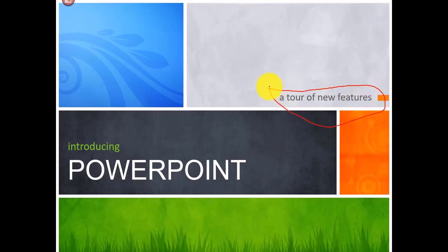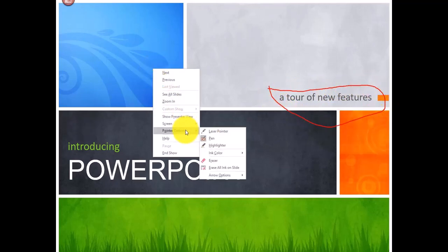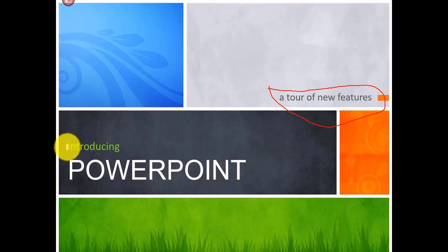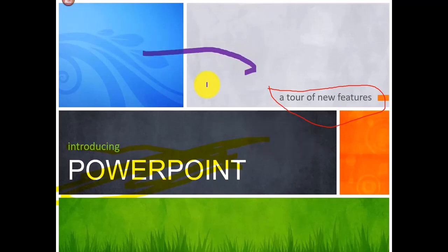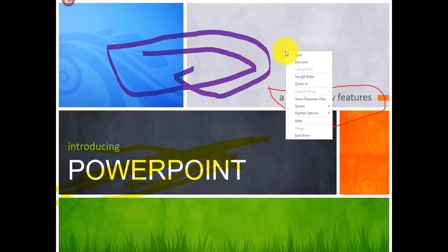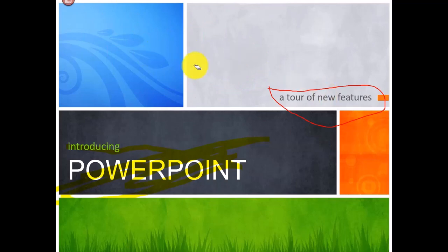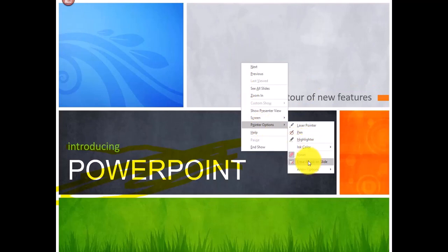Right-click, go to Pointer Options, and select Pen — it lets you draw on the slide while you're speaking. There's also a Highlighter, similar to a real highlighter, so you can highlight content as you speak. You can also change the ink color — for example, I'll change it to purple — and then draw in that color.